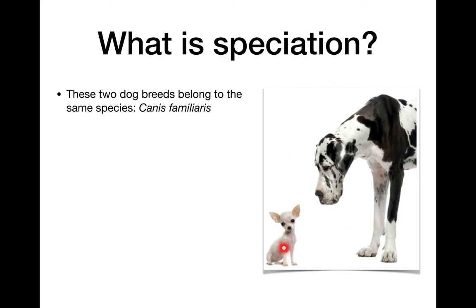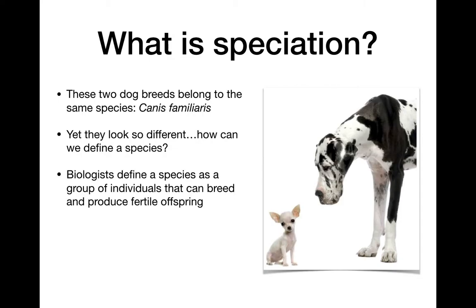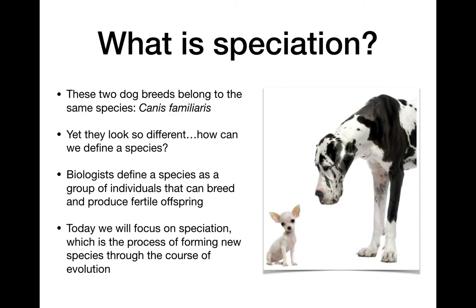These two dogs are the same species even though they look very, very different. So if they can be so different but still be the same species, how can we define a species? The official definition is that it's a group of individuals that can breed and produce fertile offspring — if that offspring can then breed, they are the same species. Speciation is the process of forming new species, which happens through the course of evolution.